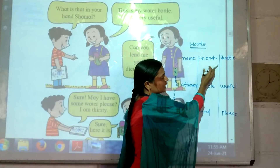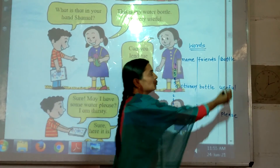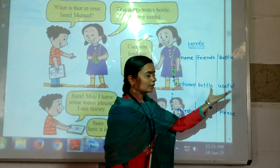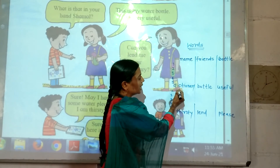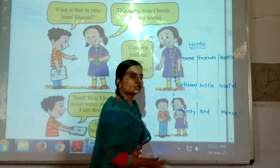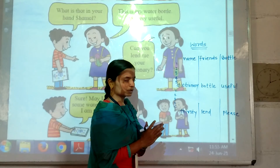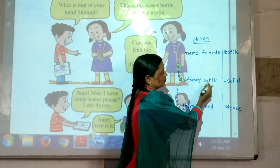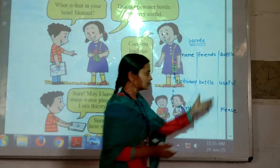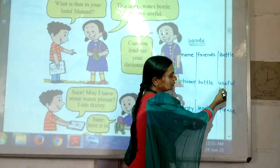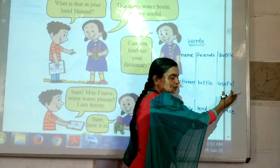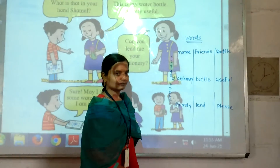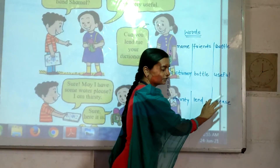Friends means mitra. Bottle — B-O-T-T-L-E. Bottle means batli. Dictionary — D-I-C-T-I-O-N-A-R-Y. Dictionary means shabda push. Useful — useful means mer. Please — P-L-E-A-S-E. Please means krupaya.